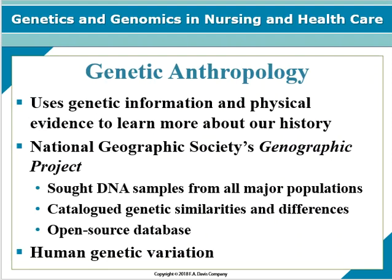Genetic anthropology is a field of study that uses a combination of genetic information and physical evidence to learn more about our history as a species. In 2006, the National Geographic Society began the Genographic Project with the goal of assembling DNA from more than 100,000 people and creating the largest database in the world, cataloging genetic similarities and differences across all major populations. Human genetic variation describes the genetic differences that can be found within and between groups of people.